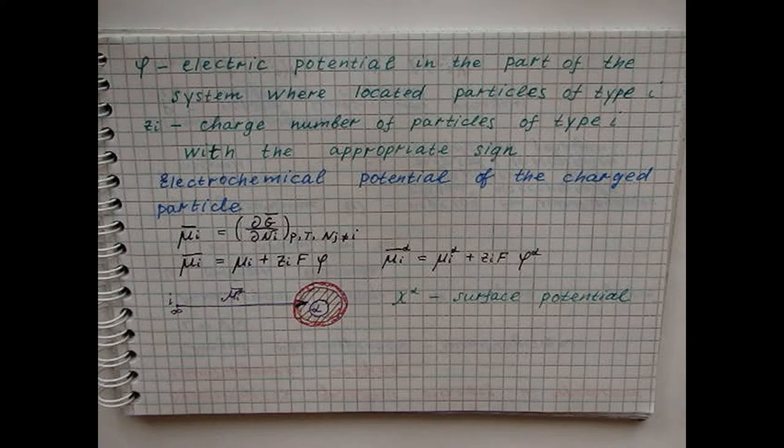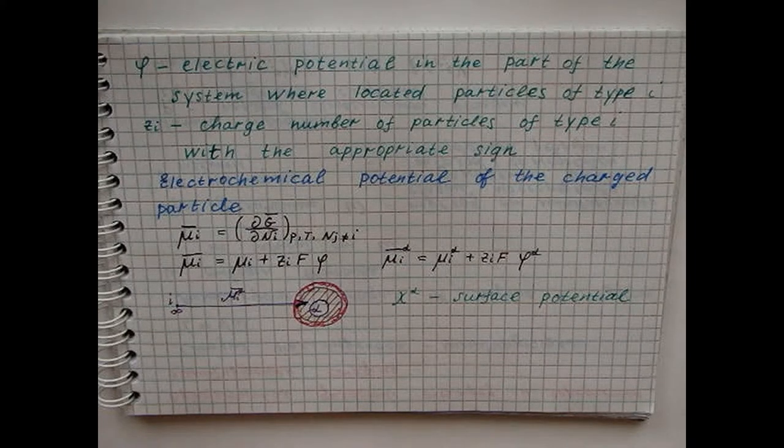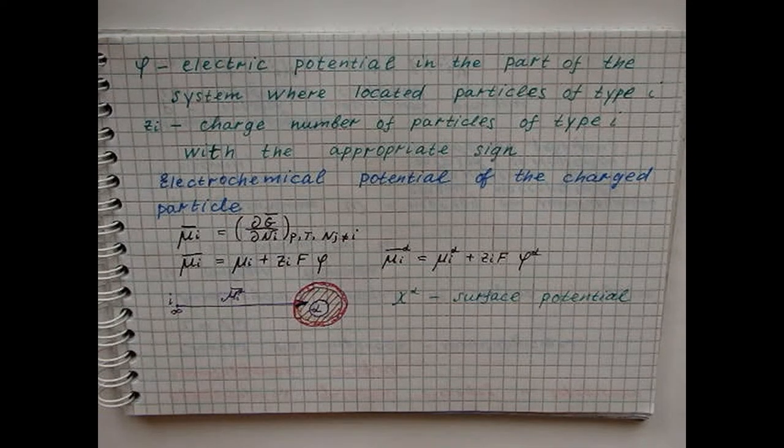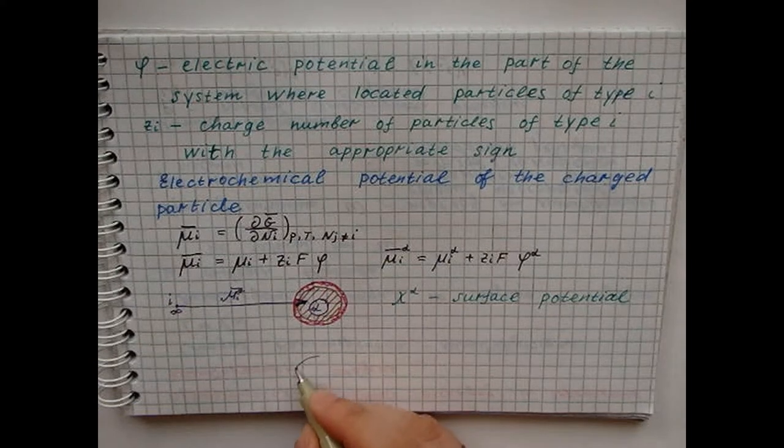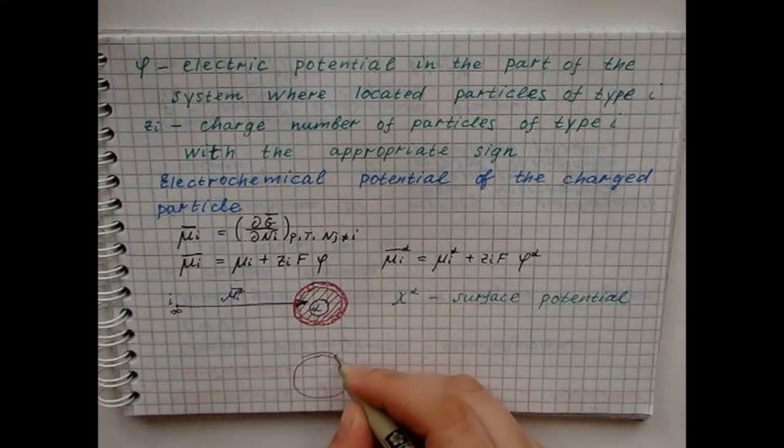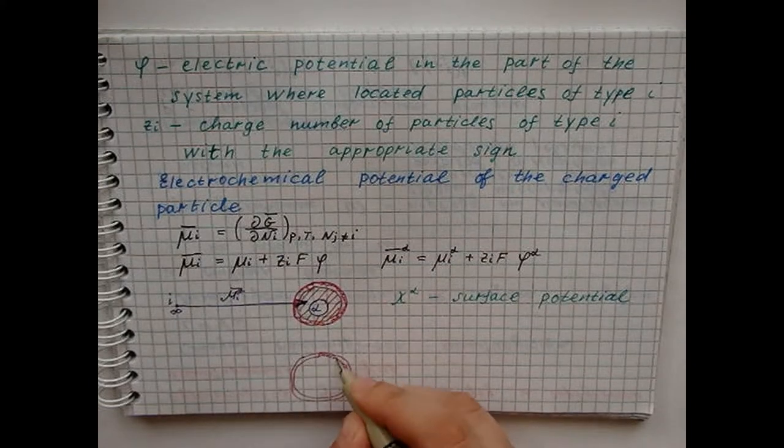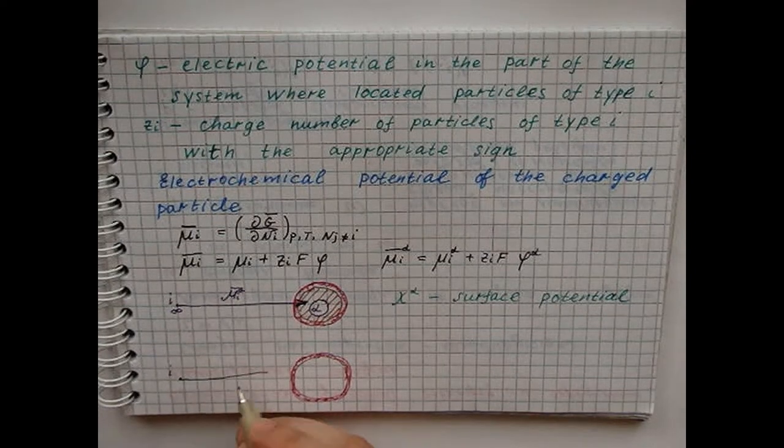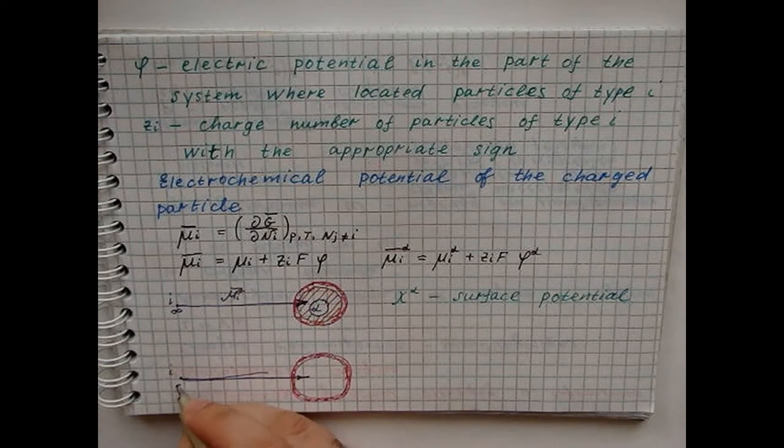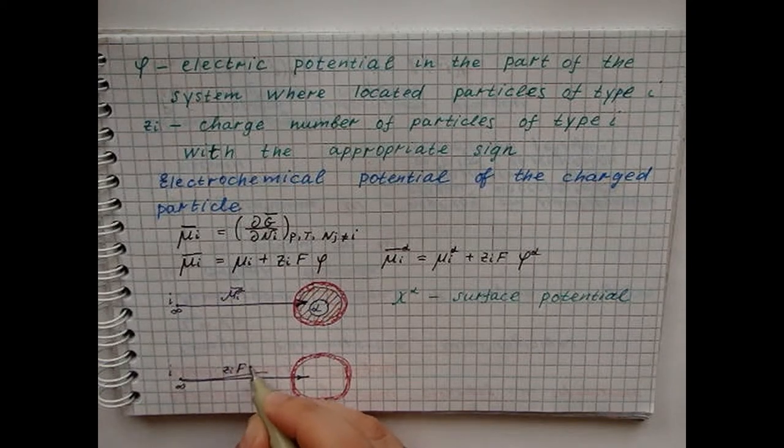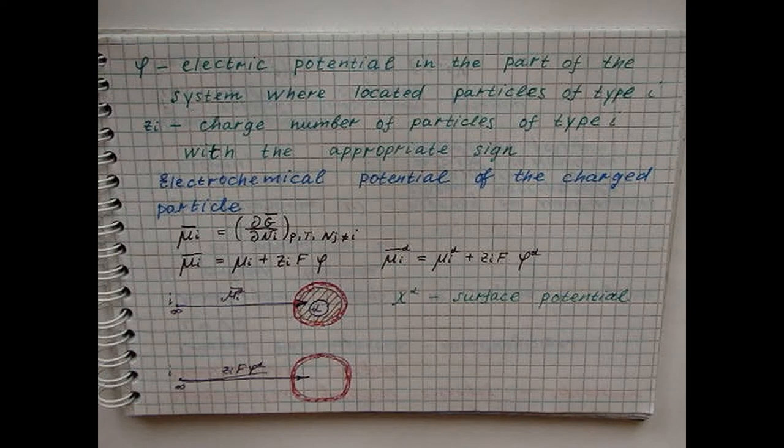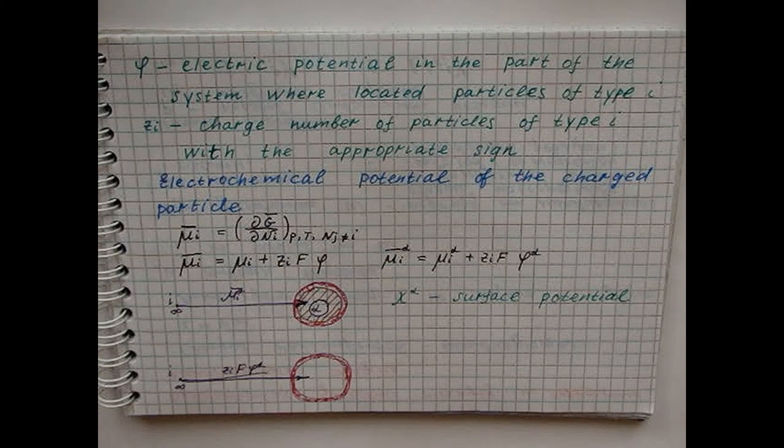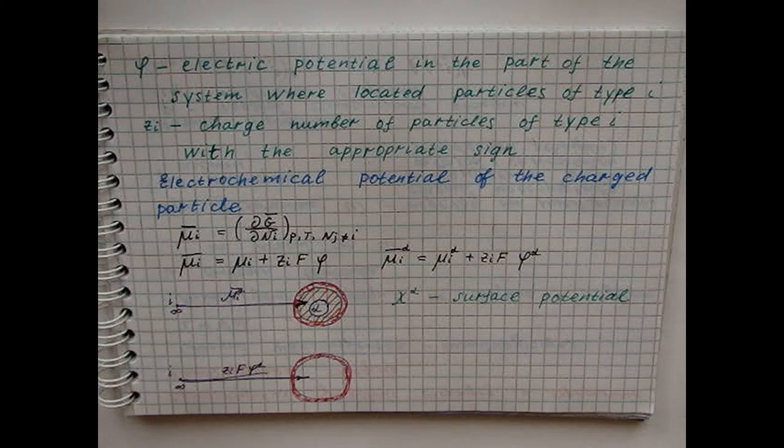The electrochemical potential of a particle in the alpha phase is equal to the work of transferring a mole of component I from infinity in a vacuum into this phase. To divide this work into chemical and electrostatic components, suppose that a charged surface layer can be mentally removed from the alpha phase, which also contains a surface potential. For solutions, the value of the surface potential is due to a certain orientation of the solvent dipoles on the surface and at the metal vacuum interface. The surface potential arises because the electron gas is partially displaced relative to the ions of the crystal lattice of the metal and together with their positive charges forms a dipole layer.